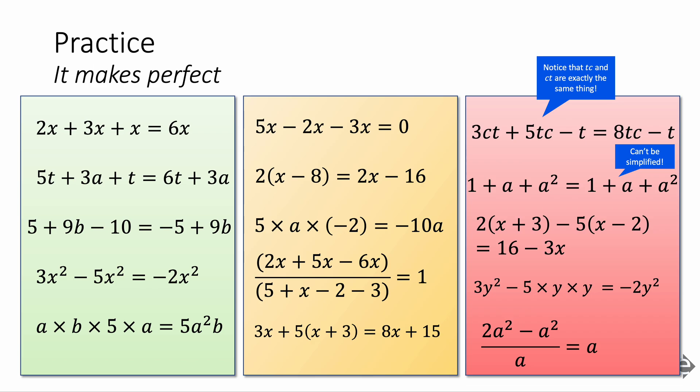Did you get it right? Let me know how well you did in the comments. Some interesting ones here. Just notice that CT and TC are the exact same. Even though the letters are back to front, they do still have the same value. And then also this one: 1 plus a plus a squared cannot be simplified because all three of those terms are different.